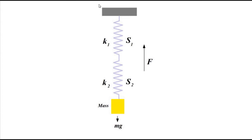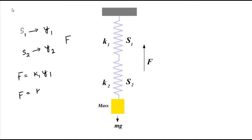Let us say the individual springs S1 and S2 undergo different elongations or displacements. S1 undergoes displacement by a factor Y1, and S2 undergoes displacement by Y2. The restoring force F is fixed. Because of different spring constants, F equals K1·Y1 and the same F equals K2·Y2. K1 and K2 are fixed, so the extensions or displacements are the only variable element here.